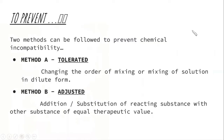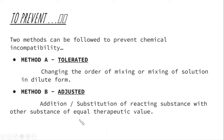There are two methods to prevent chemical incompatibility. Method A is called tolerated: we change the order of mixing of reactants or dilute the solution. Method B is called adjusted: we replace or substitute one of the reacting substances with another substance of equal therapeutic value.